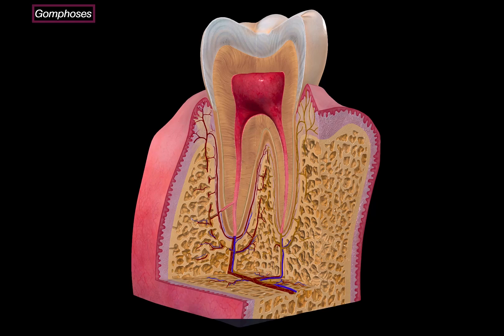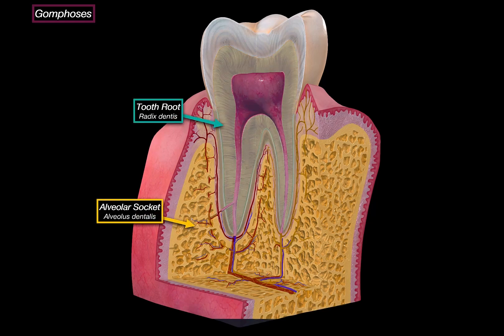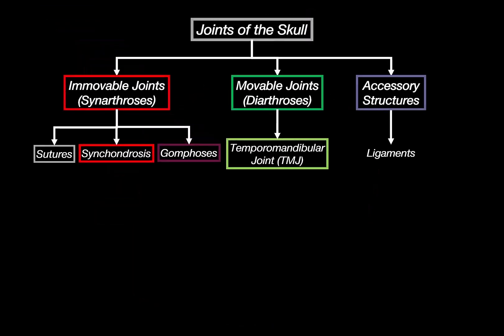It consists of three parts: the root of the tooth, the alveolar socket in either the mandible or the maxilla, and the periodontal ligament, which acts as connective tissue anchoring the two together. Even though this is a fibrous joint and mostly immobile, it allows a tiny bit of movement to act like a shock absorber during chewing.